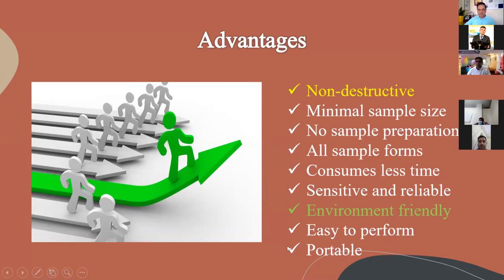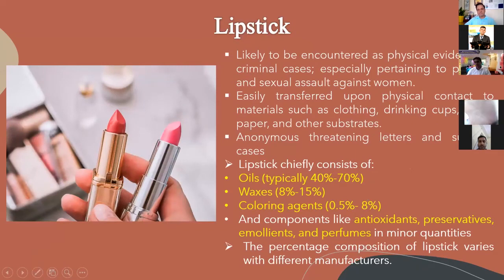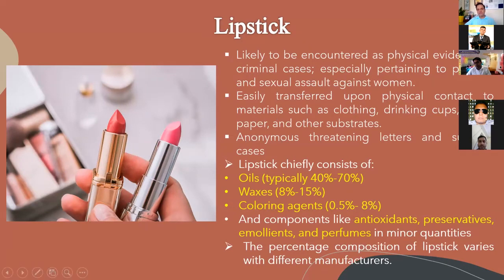The first cosmetic sample I consider most important and significant is lipstick. It is likely to be encountered as physical evidence in criminal cases, especially pertaining to physical and sexual assault against women. The beauty of this evidence lies in its easy transferable nature — it can be easily transferred upon physical contact to materials such as clothing, drinking cups, tissue paper, and other substrates. It can also be used to write anonymous letters, suicide notes, and dying declarations. Lipsticks chiefly consist of oils, waxes, coloring agents, and components like antioxidants, preservatives, and perfumes in minor quantities.